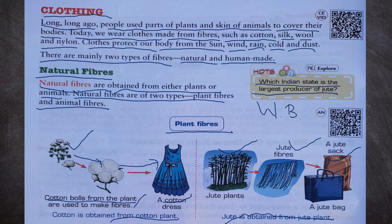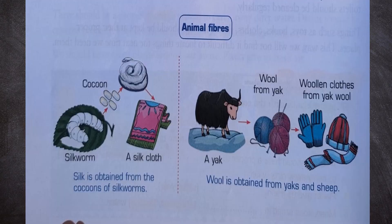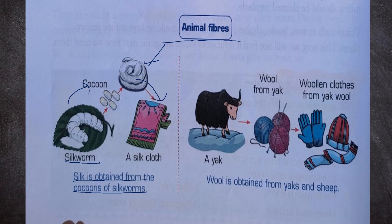Animal fibers: there are two types — silk and wool. Silk is obtained from the cocoons of silkworms. We can see a silkworm, then a cocoon, from which we get silk thread and silk cloth. Wool is obtained from yaks and sheep.